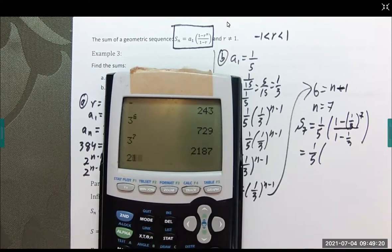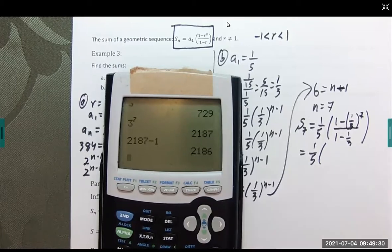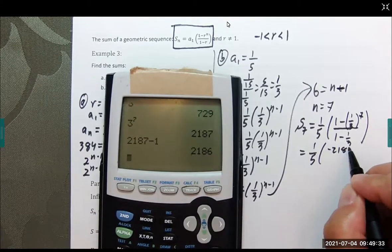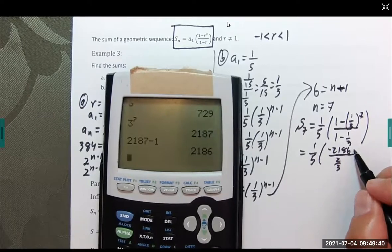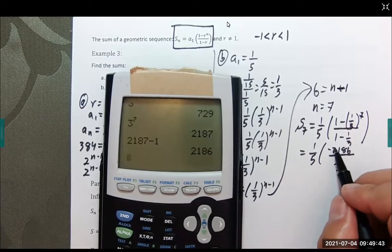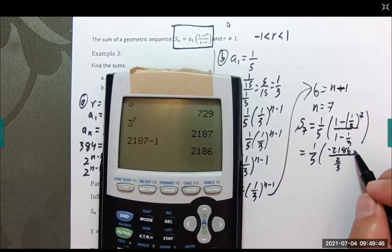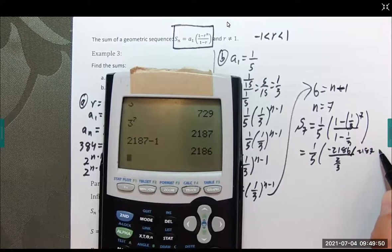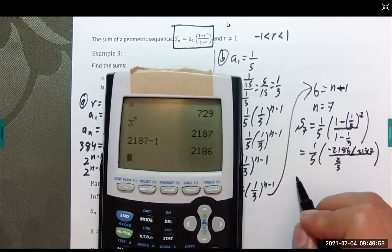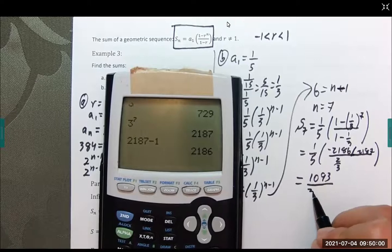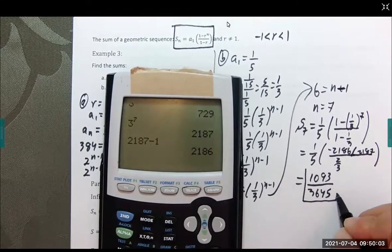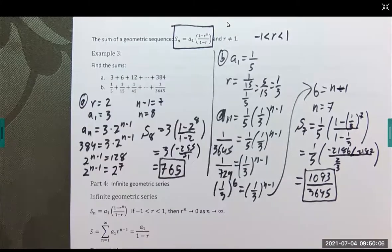Over 2,187. Anyway, simplifying this, we end up with 1,093 over 3,645. I'll let you play with the fractions, but it all works out.